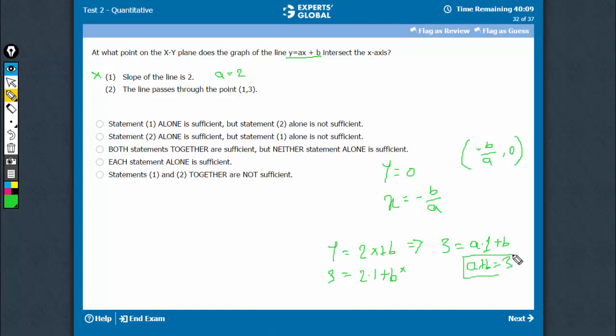This gives me one equation in a and b. Two variables, one equation cannot be solved. But when we combine, we know the value of a. Putting it here, we'll find the value of b, and therefore this value can be determined.